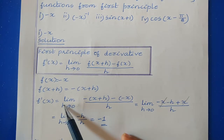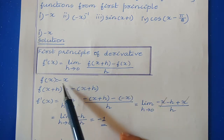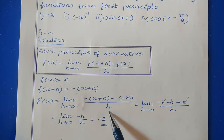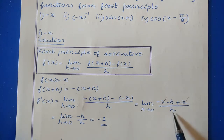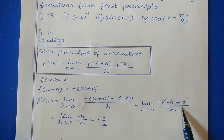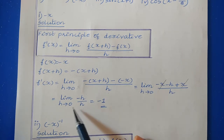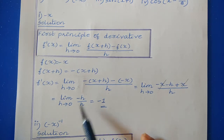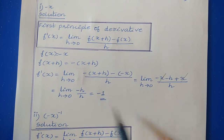So f'(x) is equal to limit h tends to 0, f(x+h) which is minus(x+h), minus f(x) which is minus x, divided by h. That is limit h tends to 0: minus x minus h, minus minus x becomes plus x, divided by h. The minus x and plus x cancel, giving limit h tends to 0 of minus h divided by h. You can cancel h, so the answer is minus 1.